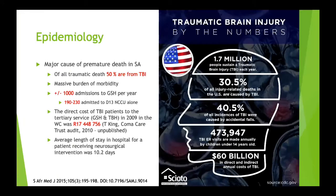Just a little background on the epidemiology of traumatic brain injury and why it's important. Traumatic brain injury is a major cause of premature death in South Africa. Of all our traumatic deaths, 50% are due to traumatic brain injury, and it places a massive burden on morbidity for survivors. Here at Groote Schuur we admit roughly about a thousand patients with traumatic brain injury every year, and nearly a quarter to a fifth get admitted to the D13 neurosurgery ICU each year.